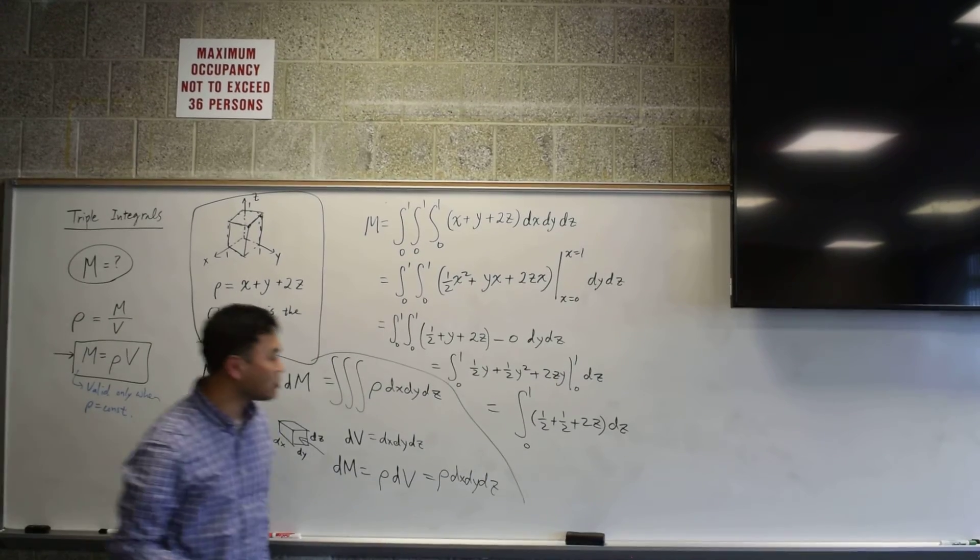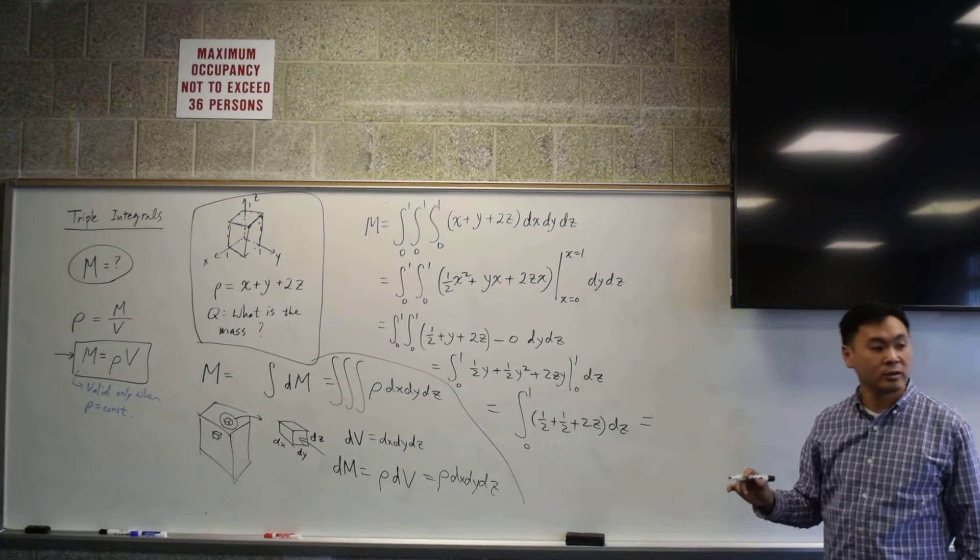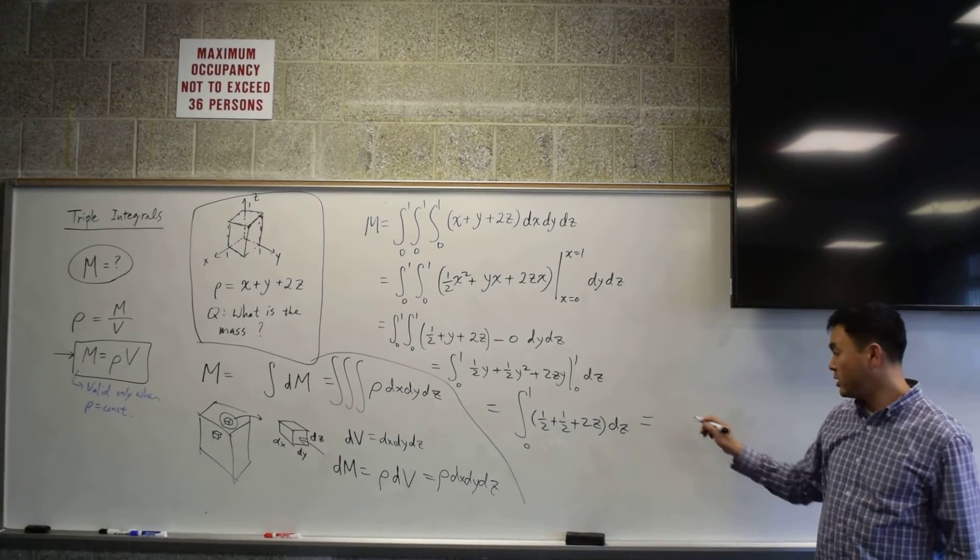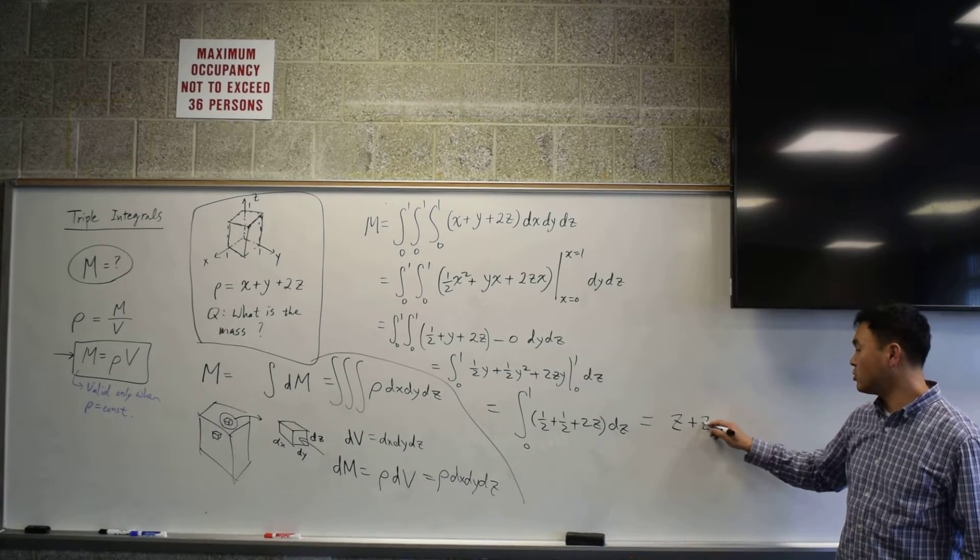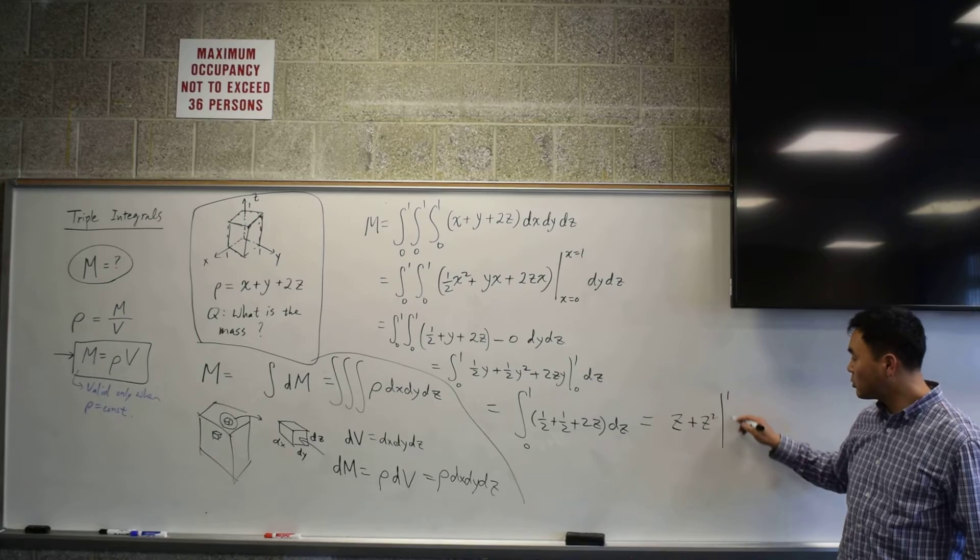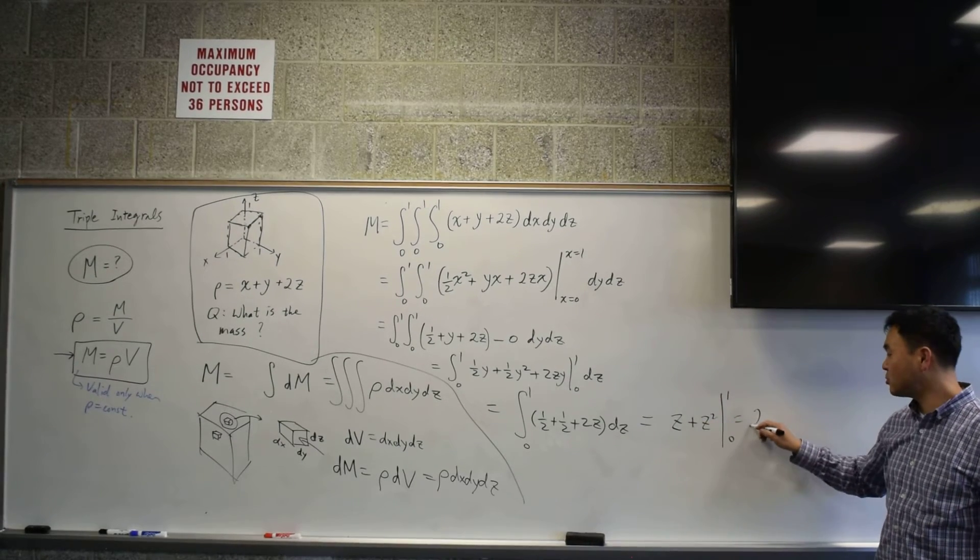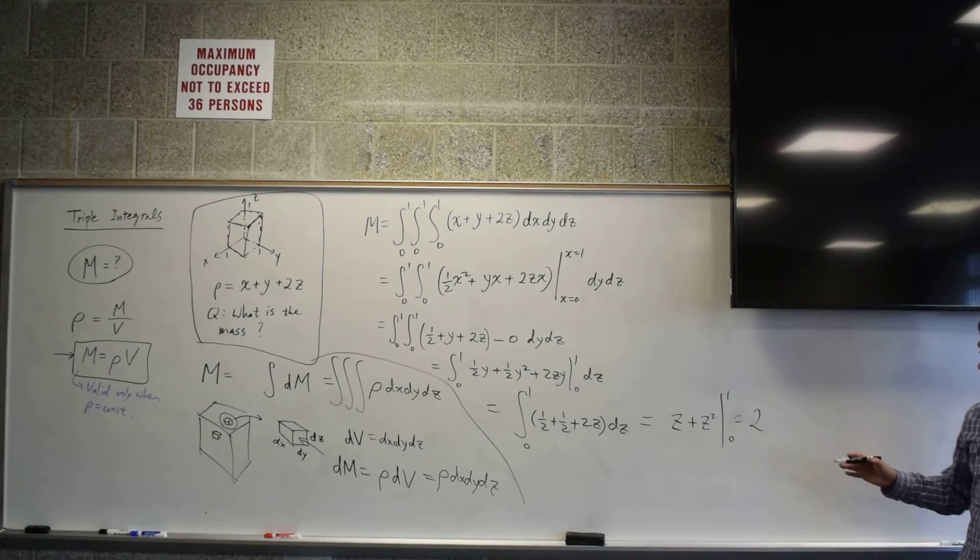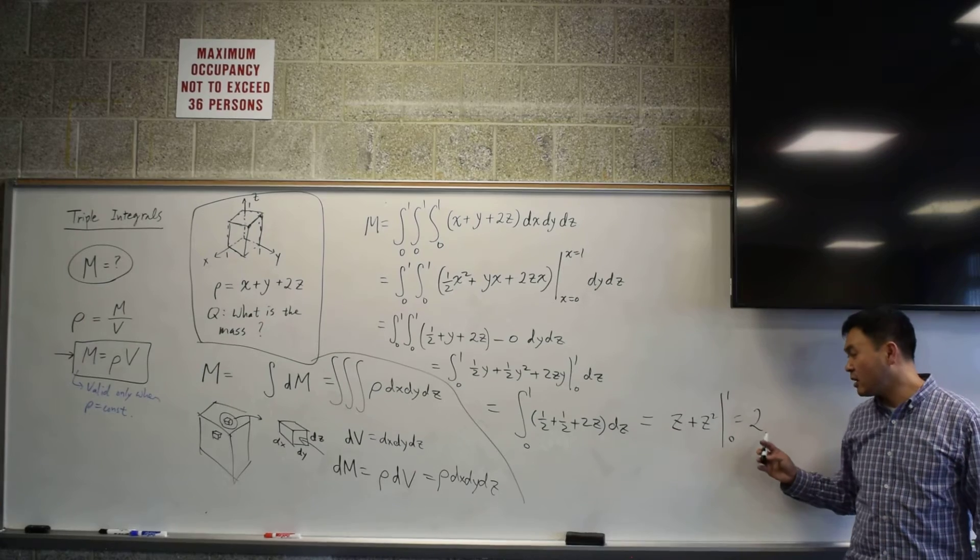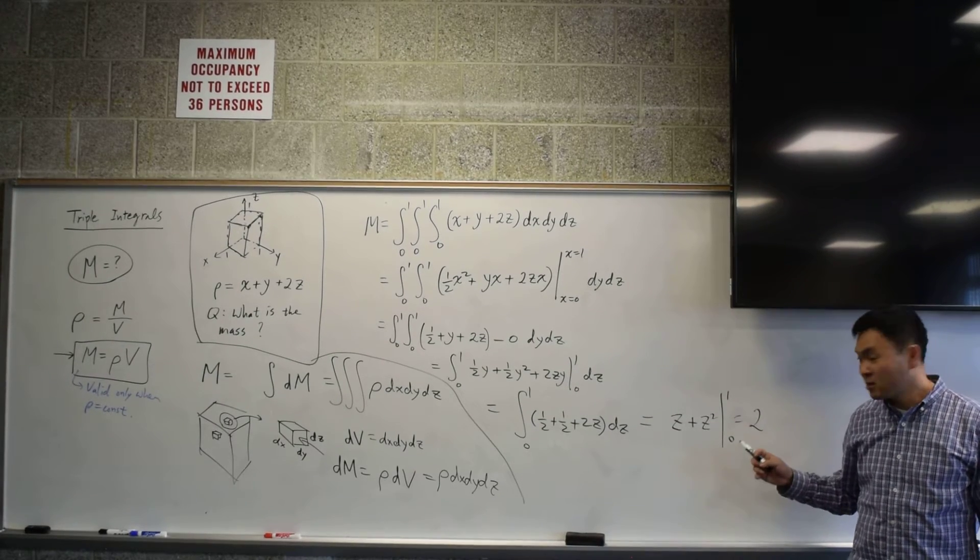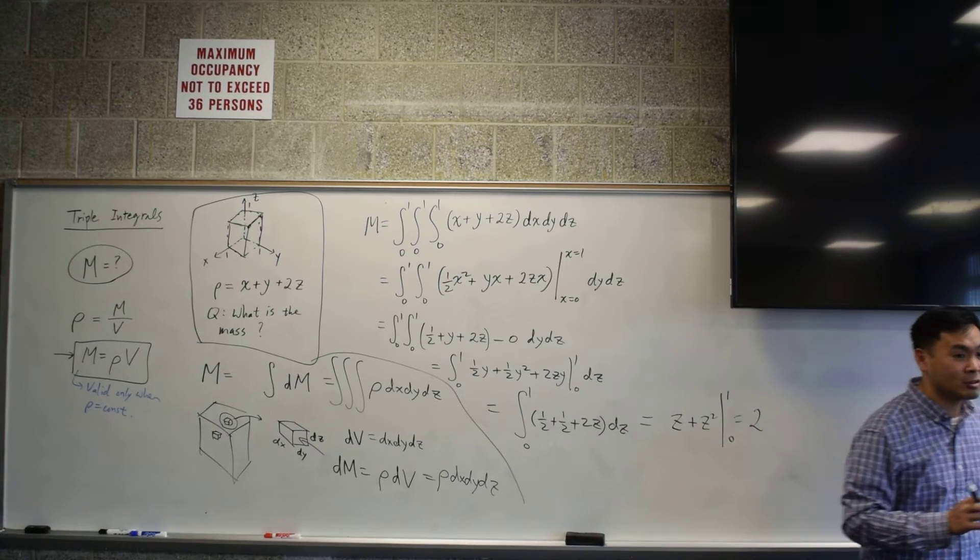Now one half plus one half is? One. If you integrate one, what do you get? Z. And if you integrate 2z, you get? Z squared. And then when you plug in one and zero, what do you get? One plus one? Two. So if we were using that unit of kilograms per cubic meters, at the end of the day, we will say that whatever that was, that cube would be having the mass of 2 kilograms. That's what we will get.